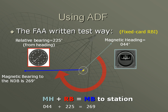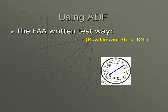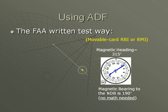Moveable card RBI and RMI, with the heading at the top, give us a direct indication of magnetic heading. In this case, our aircraft is heading 315, or northwest. The relative bearing is nearly identical to the previous example, but with moveable card RBI and RMI, the needle points to the magnetic bearing of 190. No math is needed. A quick glance at the instrument tells you instantly that a turn to 190 will take you toward the station. Still, it's useful to draw or visualize the overhead situation for questions like this.